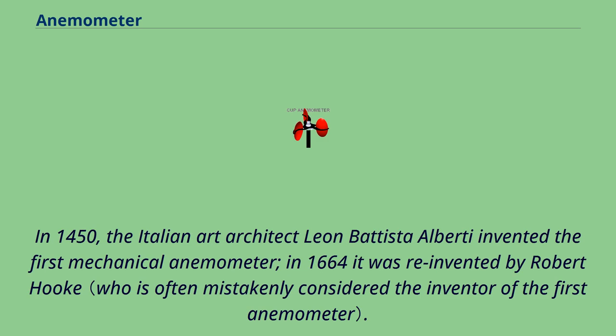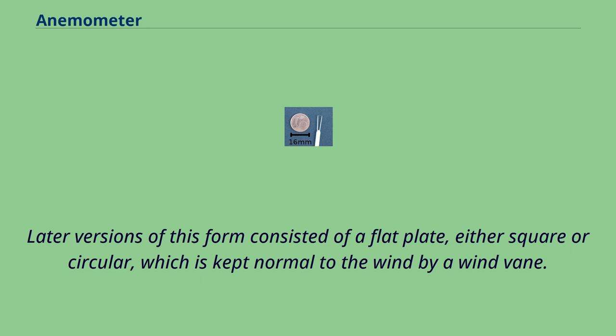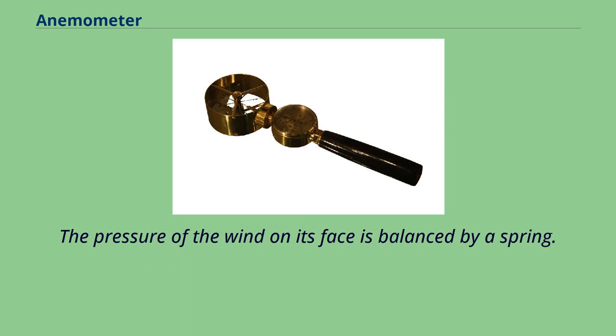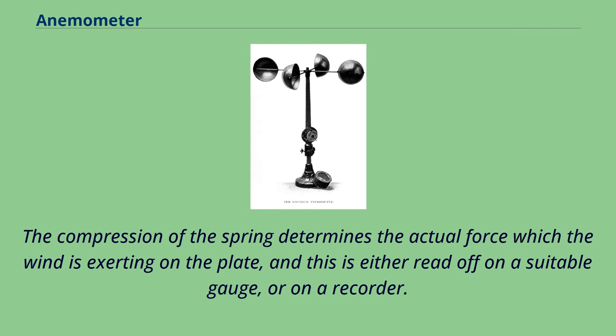In 1450, the Italian art architect Leon Battista Alberti invented the first mechanical anemometer. In 1664 it was reinvented by Robert Hooke. Later versions of this form consisted of a flat plate, either square or circular, which is kept normal to the wind by a wind vane. The pressure of the wind on its face is balanced by a spring. The compression of the spring determines the actual force which the wind is exerting on the plate, and this is either read off on a suitable gauge, or on a recorder.